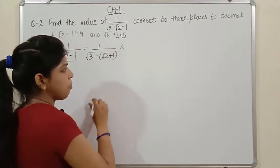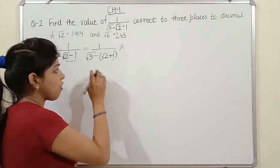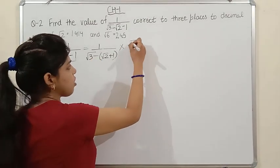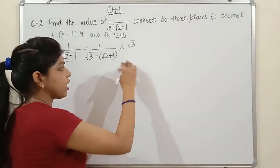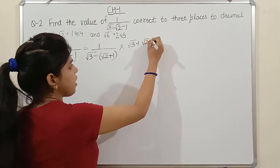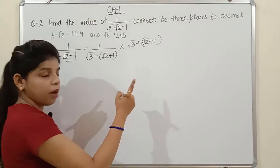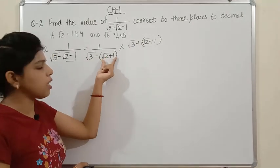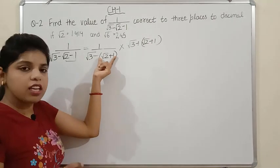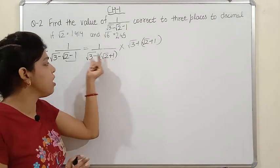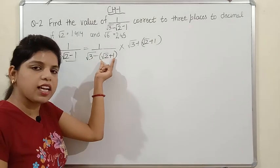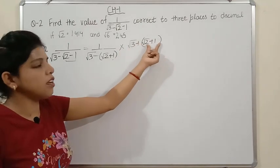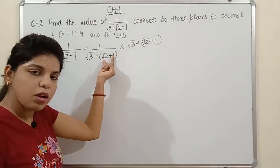The concept of rationalizing is: we just change the sign between the two terms. So here we have (a - b) in the denominator where b = (√2+1). We multiply and divide by (a + b), i.e., √3 + (√2+1). An important point: you do not change the sign of b — only the outer sign between a and b changes. So it becomes (a+b)/(a²-b²).